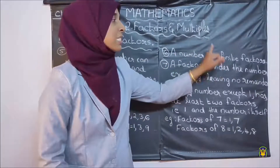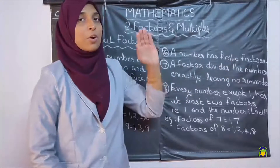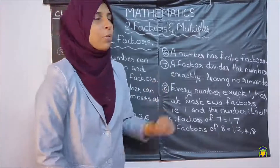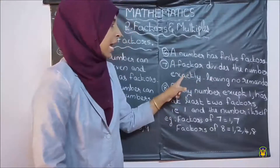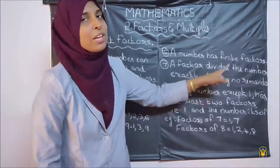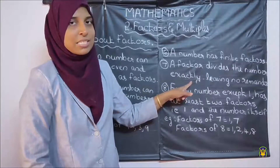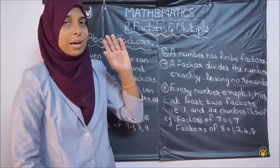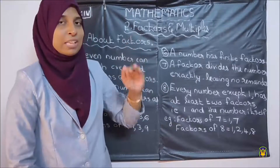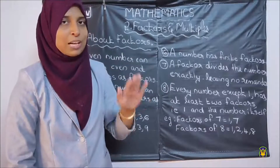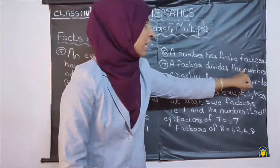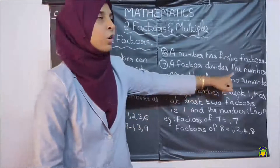A number has finite factors — only limited factors. That is the sixth point. Seventh point: a factor divides the number exactly, leaving no remainder. When we divide a number by one of its factors, we will get the remainder as 0 — the number divides exactly.